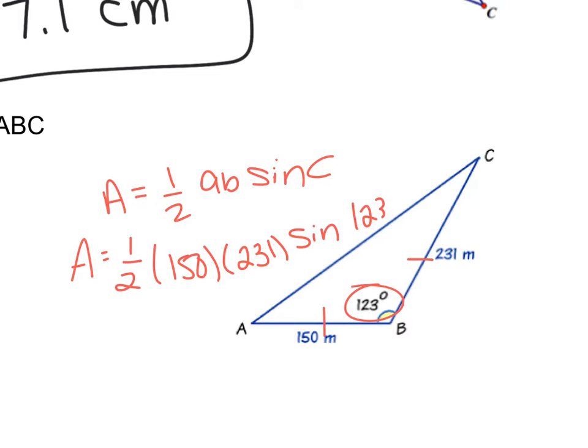And then the sine of 123. We just type this into our calculator. And after I type that into my calculator, I actually get a big, big, big number. I get 14,529.97. I'm just going to round out to two decimal places, and that's meters squared.